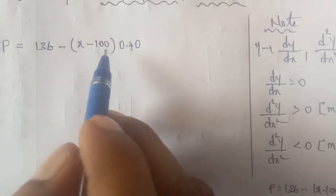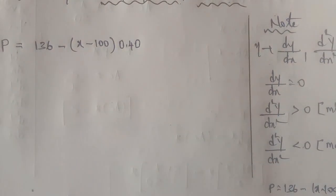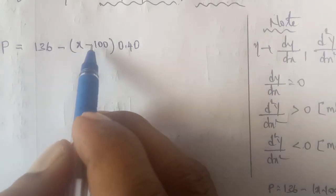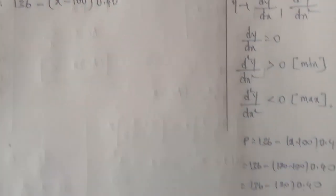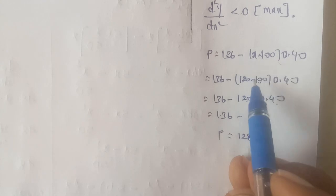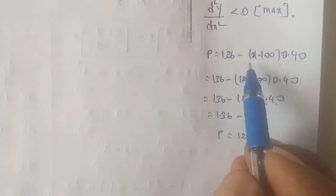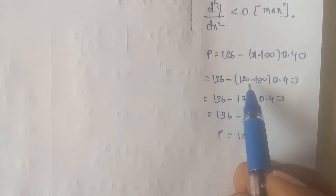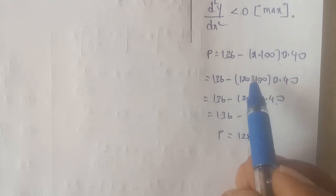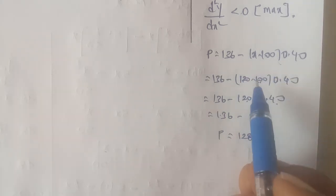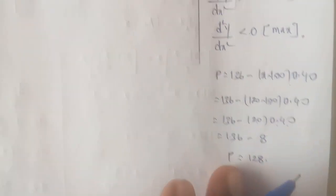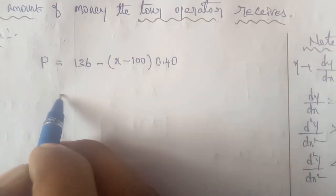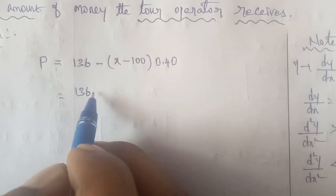If the number of passengers is extended, you need to find the number of passengers that gives maximum money. So, x is the number of passengers, and understanding the course, the extended number of passengers here is 120 as an example. The revenue function needs to be set up to find the maximum income.